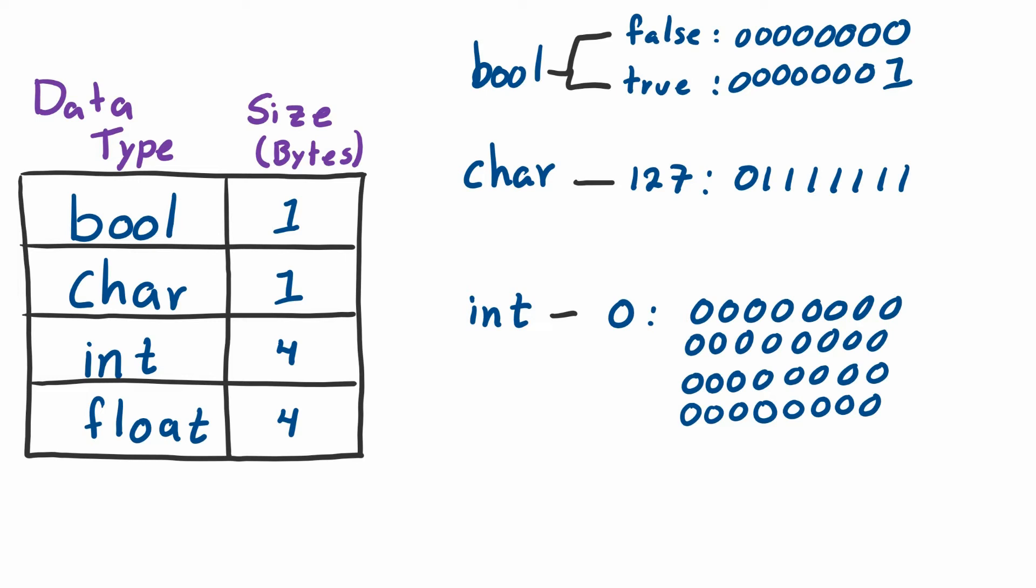To contrast these, let's look at character. The character also has the value zero. The value zero in character will be just one byte: eight zeros.